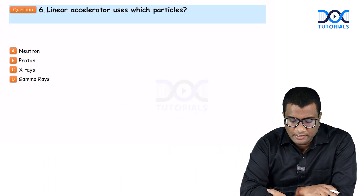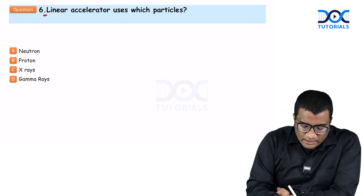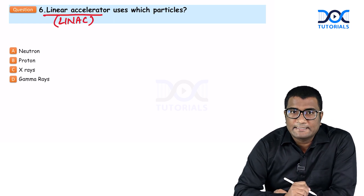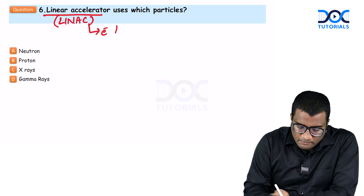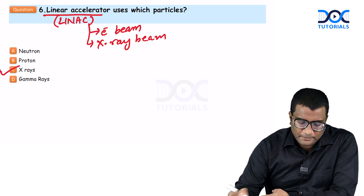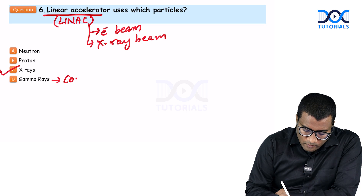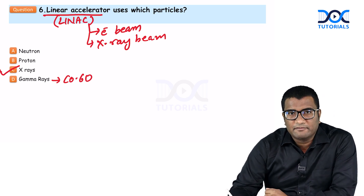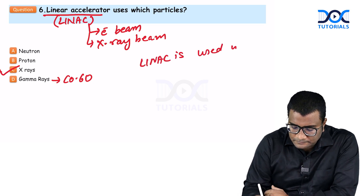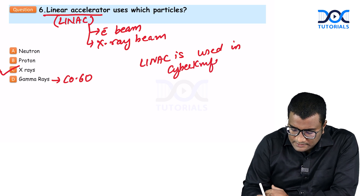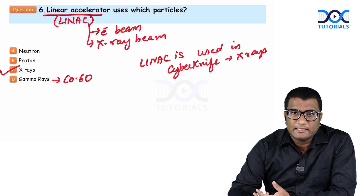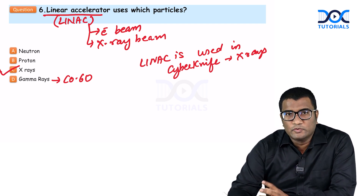The next question: a linear accelerator — also called linac — uses which particles? Linac is used in radiotherapy to generate X-rays; it produces an electron beam and an X-ray beam. Gamma rays are produced by the cobalt-60 machine used in gamma knife, whereas linac is used in cyber knife. So linear accelerator, used for external beam radiotherapy, teletherapy, and cyber knife, generates X-rays.